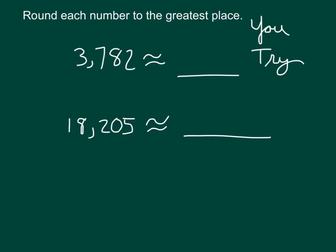Now it's your turn to try. Go ahead and round each number to the greatest place, just using your place value understanding. The greatest place is the digit furthest to the left. For the first number, we're rounding to the nearest thousand. For the second number, the greatest place is the 10,000s. Pause the video while you work out these problems.